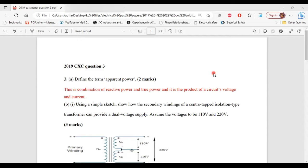So let's begin for A. It says define the term apparent power. So apparent power is the combination of the reactive power and true power. It is the product of the circuit's voltage and current, or in other words, the total power in a circuit that is needed for a load to operate.